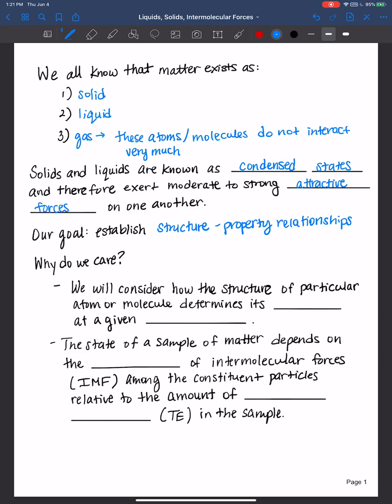So why do we care about this? We will consider how the structure of a particular atom or molecule determines its state of matter at a given temperature. State and phase of matter are used interchangeably, and this is all temperature-dependent. You may see a structure of a molecule you've never seen before or worked with. However, after studying this chapter, you will have a better understanding to make a hypothesis as to what state of matter that particular molecule exists at room temperature, for example.